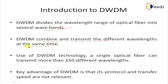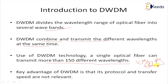Due to the adoption of WDM technology, a single optical fiber can transmit more than 150 light waves at different wavelengths simultaneously, and each light wave can reach a maximum transmission speed of up to 10 Gbps. This enables terabyte-per-second transfer speeds. A key advantage of WDM is that its protocol and transfer speed are not constrained.